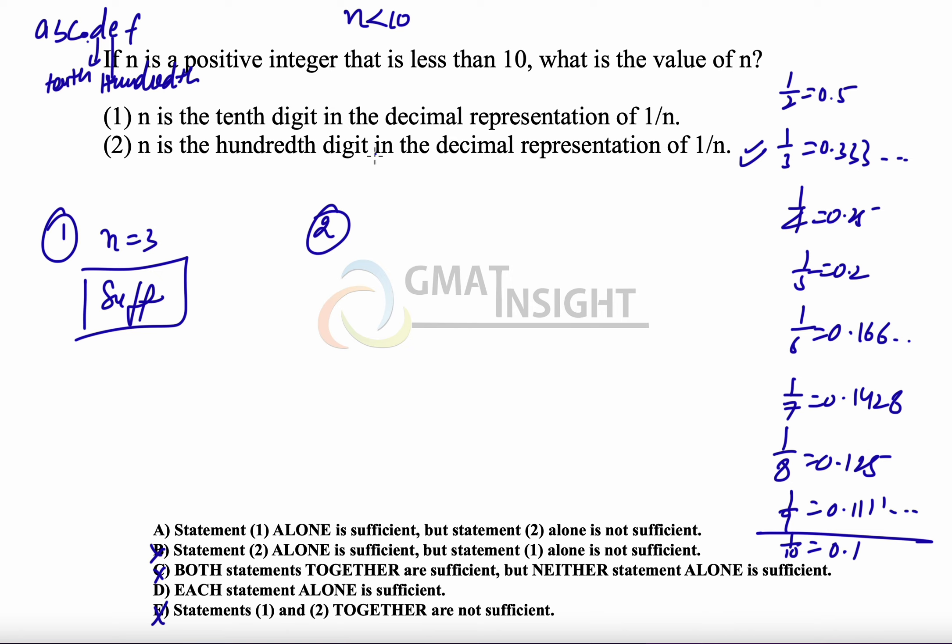it says that n is the 100th digit in the decimal representation of 1 upon n. In that case, you can see 1 upon 3 has value 0.33. That means, 10th digit is valid in this case. But 1 upon 6 also satisfies it because it has the 10th digit same as the number.